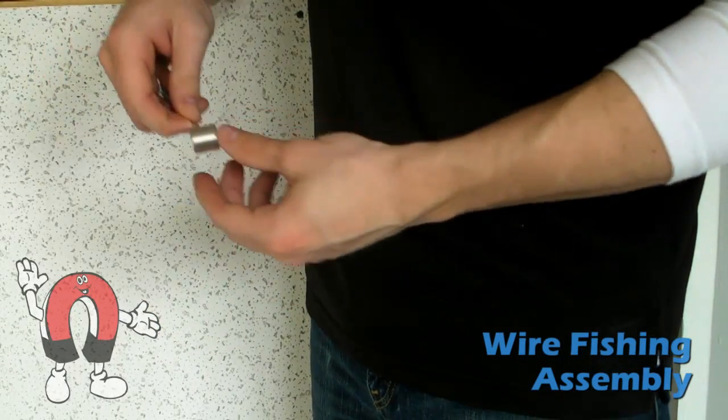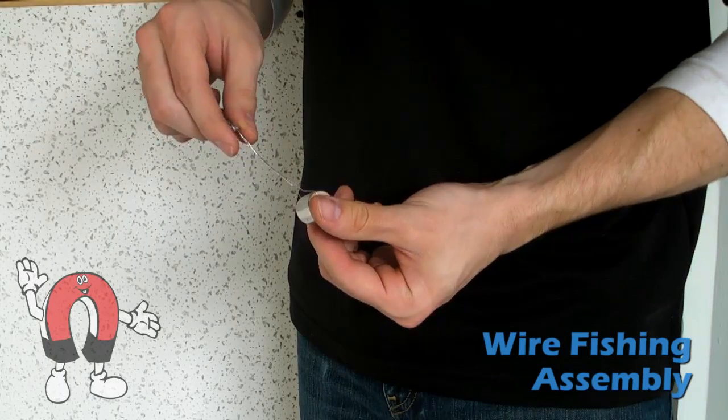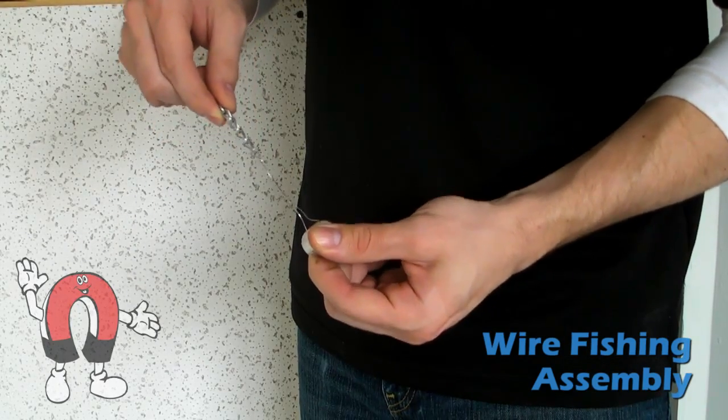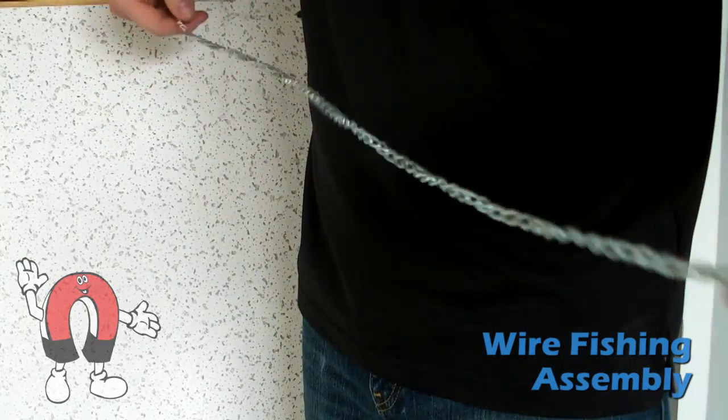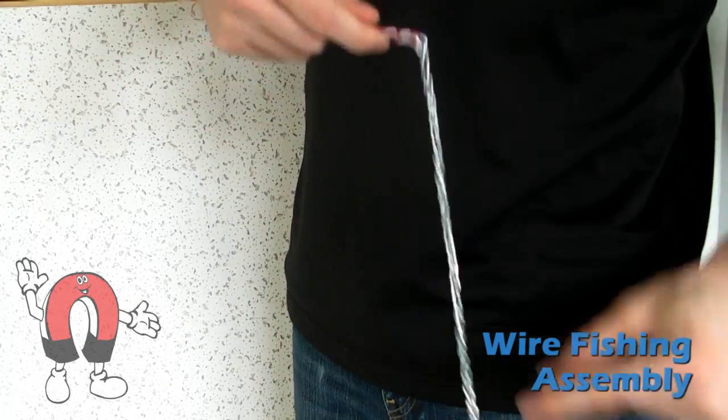Here is the final setup for the wire fishing leader. The magnet, which is firmly attached to the pull chain, can then be attached to a spool of wire. We are now ready to do some wire fishing.